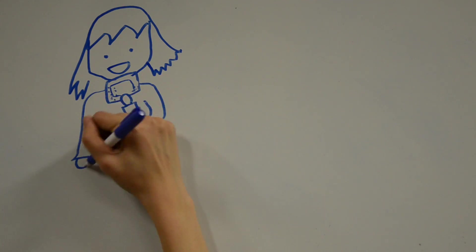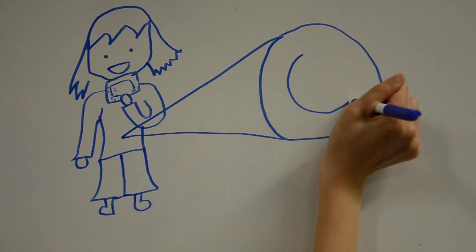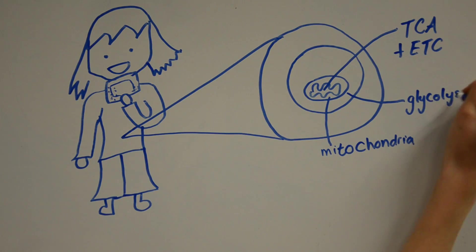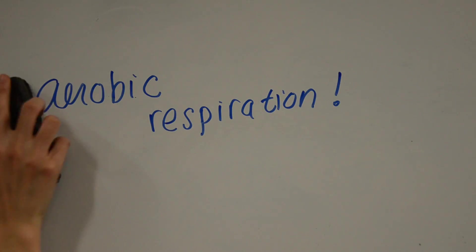Let's say that you've just had a hearty lunch of carbohydrates and your body is trying to break down these carbohydrates for energy. The body does this in a process called aerobic respiration.